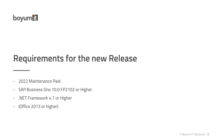First up, the requirements of the new release. You of course need to have paid your 2022 maintenance, and you need to run SAP Business One FP 21.02 or higher. I will get more into that in the next slide. The framework has not changed — you still need to have .NET 4.7, and Office, if you want to do integrations with print delivery and so on. Office is still a minimum requirement of 2013 or higher.